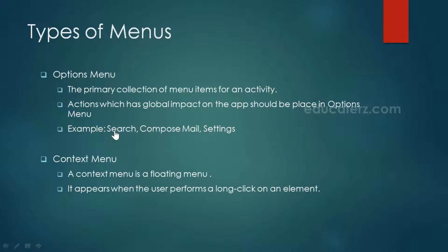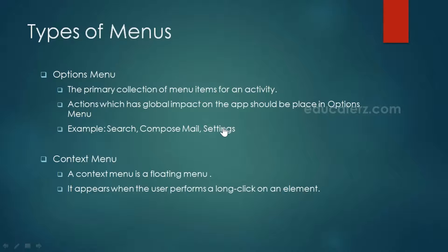For example, in whatever app you open, you'll find a search button by default. If you go to a mail application, you'll always find the compose button at the top of your app bar. Settings is also found in every application. We will discuss the options menu in detail in the next session.